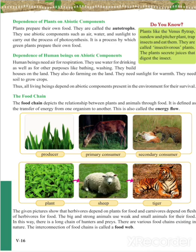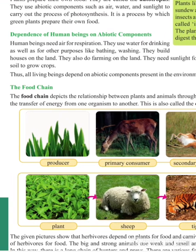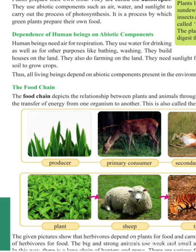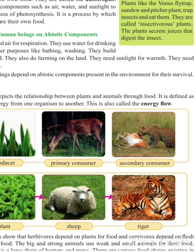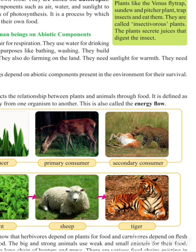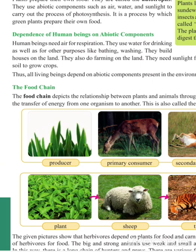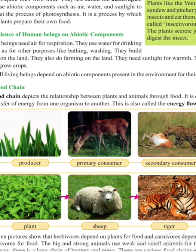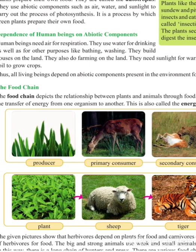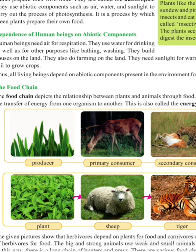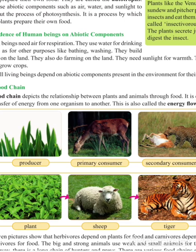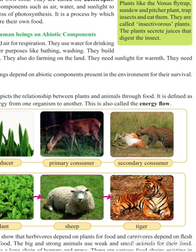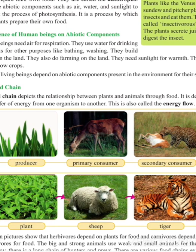We will now see the next point: the food chain. The food chain depicts the relationship between plants and animals through food. It is defined as the transfer of energy from one organism to another, which is called energy flow. As you can see in the picture, plants are producers, herbivores are the primary consumers, and carnivores are the secondary consumers.